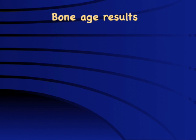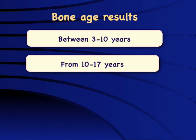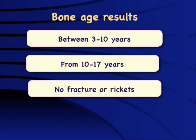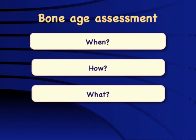What are the usual bone age results we see? I'll sample a few from the last month. A 7-year-old girl with precocious puberty gets reported as bone age 3 to 10 years — as good as useless. Another report says 10 to 17 years, and the best one: 'no evidence of fracture or rickets.' We might as well default to 0 to 99 years — it would be 100% sensitive, specific, and have perfect validity. This illustrates why pediatricians need to know how to assess bone age themselves.